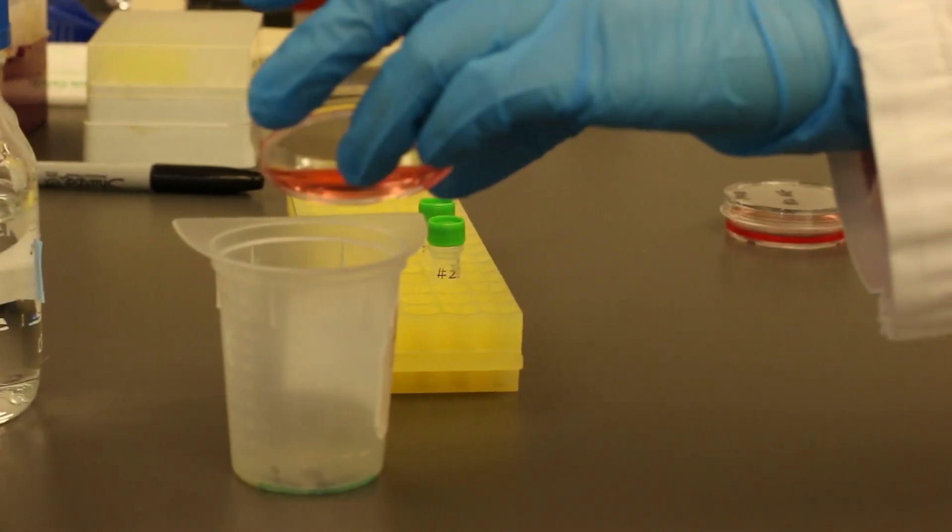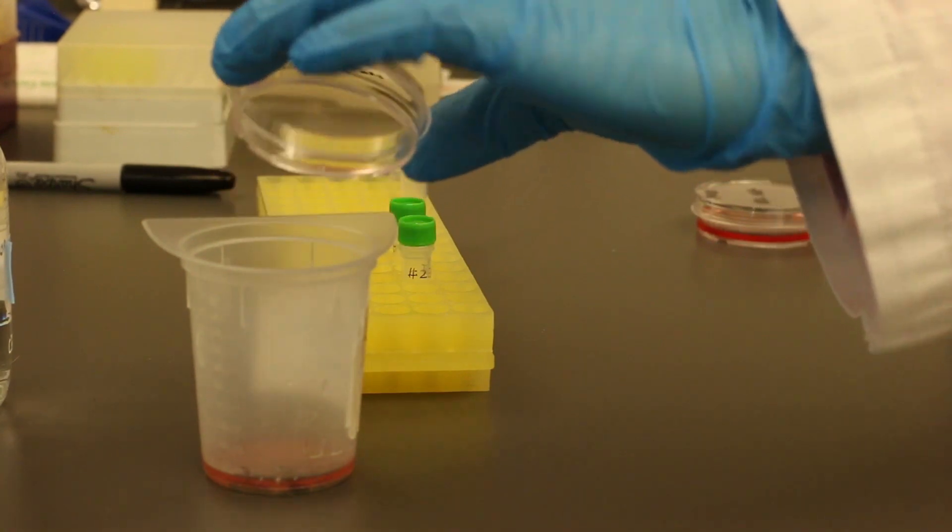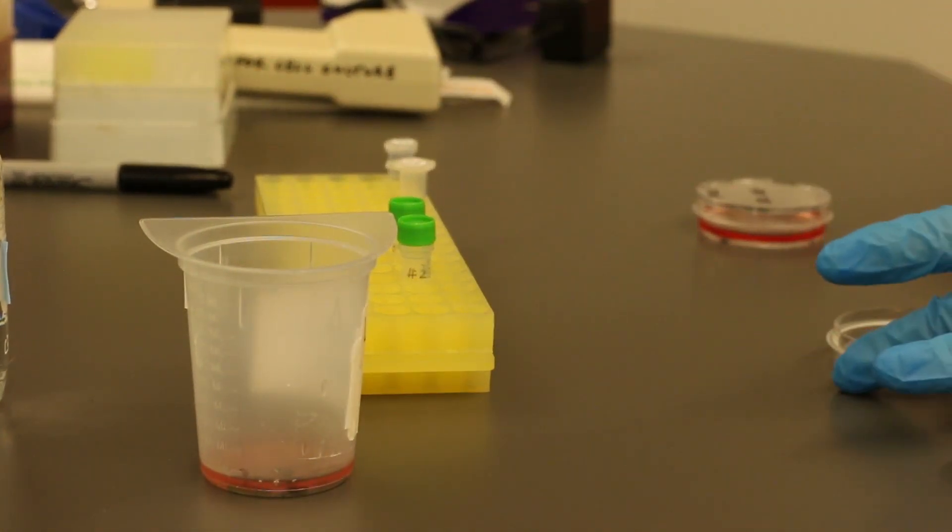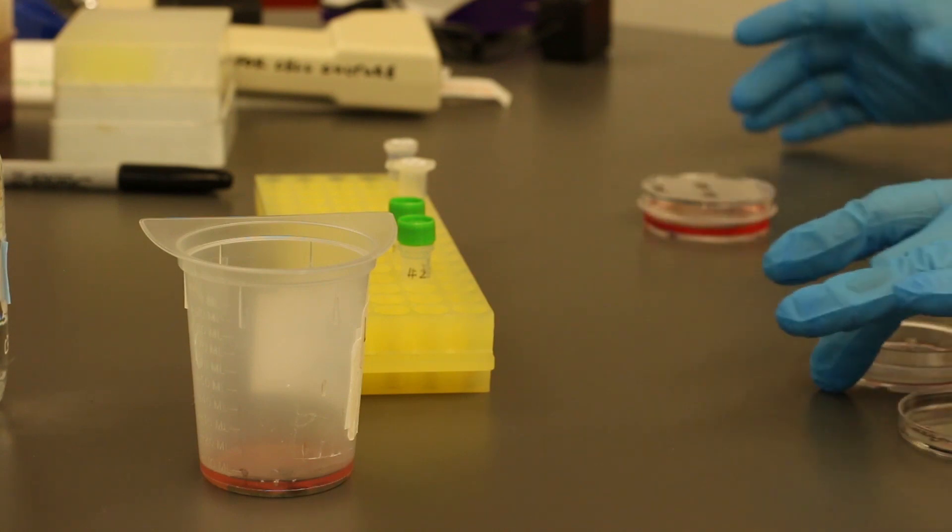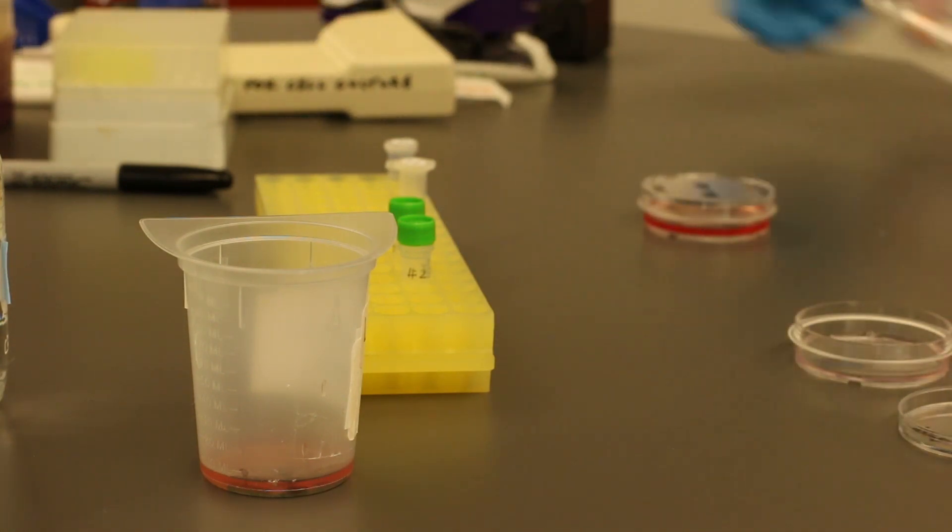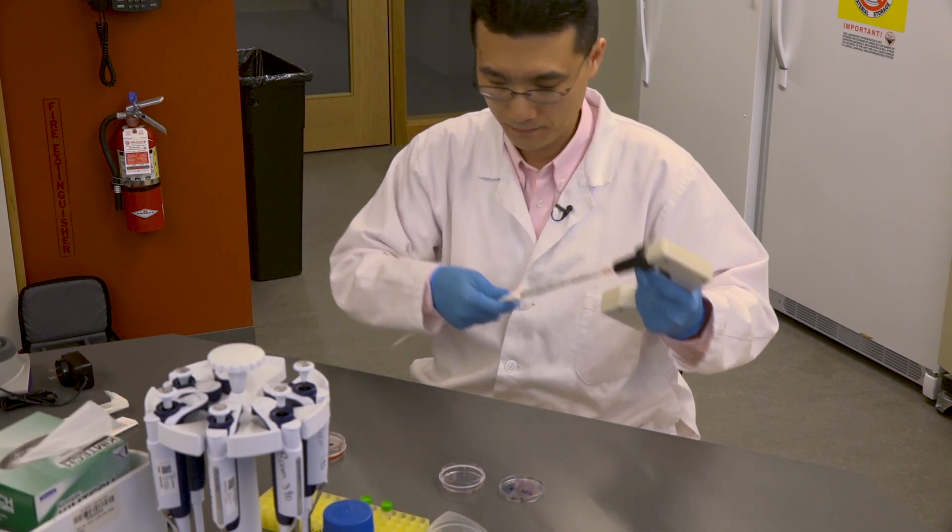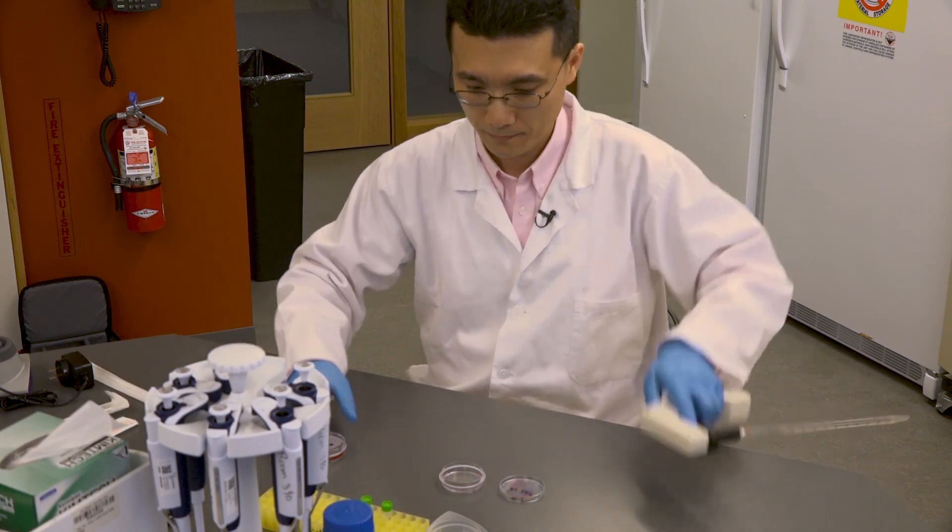Gently pour off the medium into the liquid waste container on your bench. You should notice the cells remain attached to the bottom of the dish. Then wash the cells in each dish with 5 milliliters of TBS to remove the remaining media proteins that potentially affect your Western blot results.